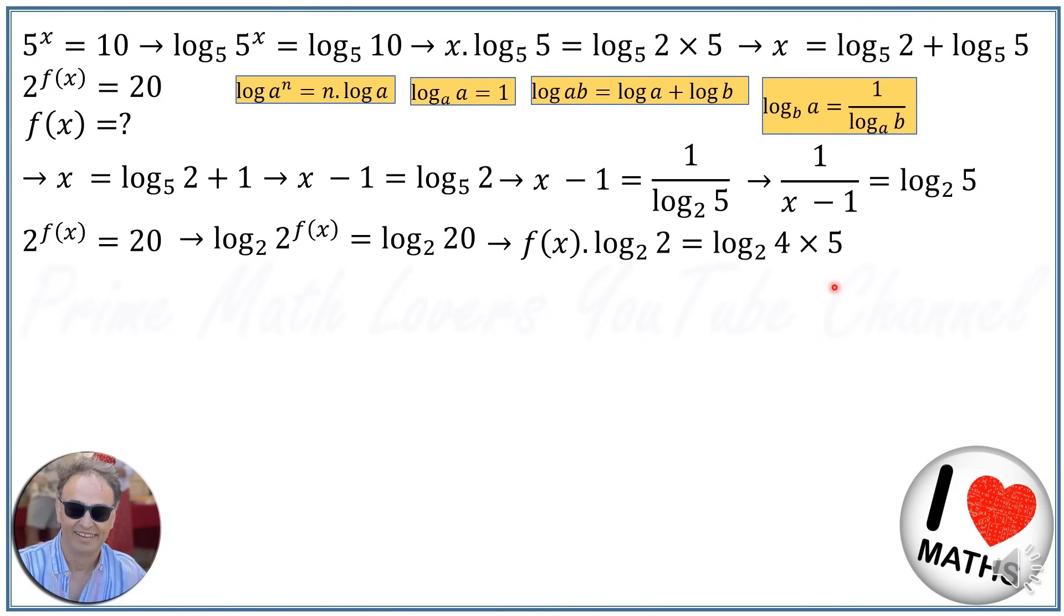Again, I replace 20 with 4 times 5. According to the other rules we had, log₂(2) = 1, and log₂(4×5) = log₂(4) + log₂(5). So f(x) will be log₂(4) + log₂(5).